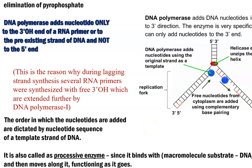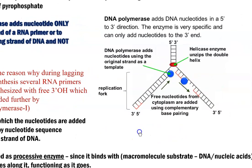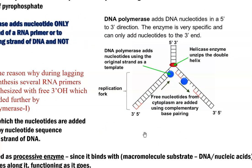The RNA primers formed have a free 3'-OH end to which new nucleotides will be added by DNA polymerase, especially the polymerase 1 enzyme. You can look at the diagram on the right-hand side, which depicts how this process takes place.